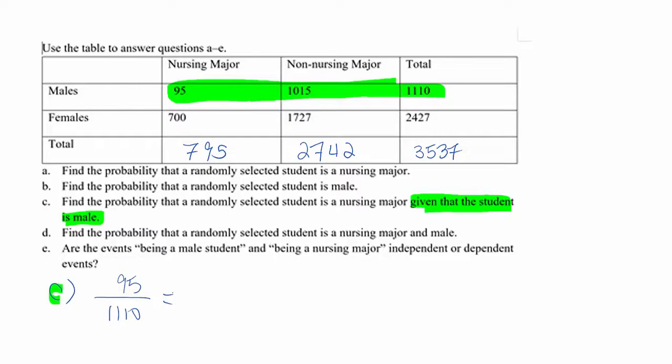95 over 1110 equals 0.0856. That's the answer.